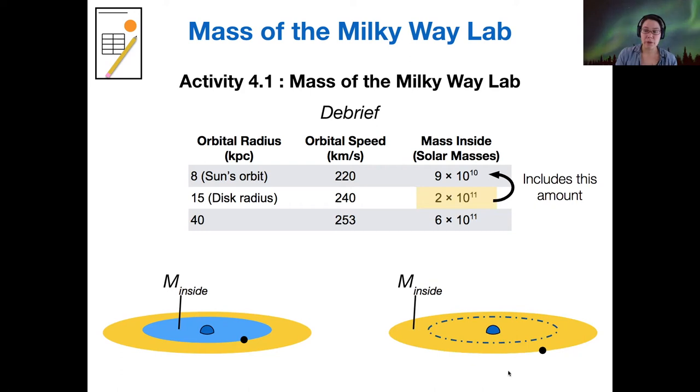So when you were following the logic of the two students who were having a debate, then you needed to realize that when we measure at 15 kiloparsecs, an object orbiting out there is influenced by all the mass that's closer to the center of its orbit. And so if you counted both of those, you would be double counting. So you only would want to use this number 2 times 10 to the 11 solar masses as the mass of the disk.